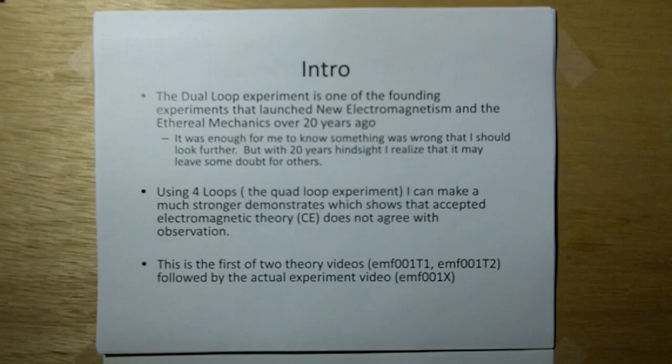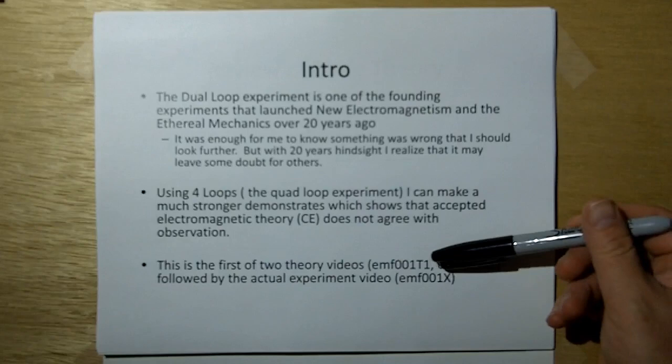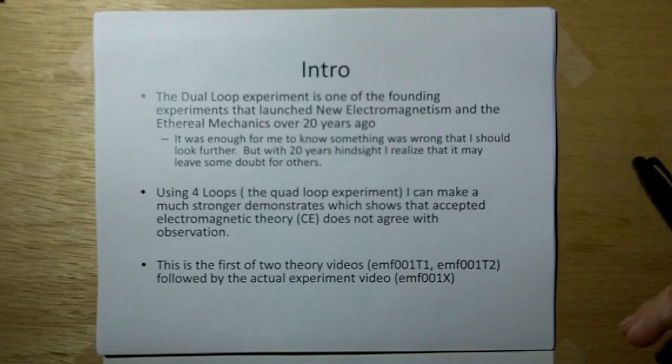The dual loop experiment launched new electromagnetism in Ethereal Mechanics over 20 years ago. With hindsight, I realized it may leave some doubt for others, so I've expanded this to four loops. I can make a much stronger case that accepted electromagnetic theory does not agree with observation. This is the first of two theory videos, 01T1, followed by 01T2, then the experiment video 01X.